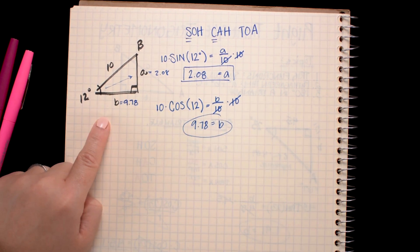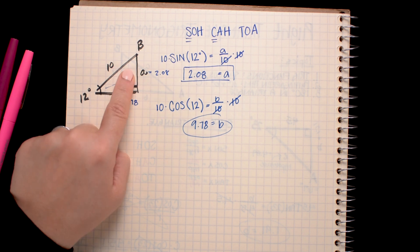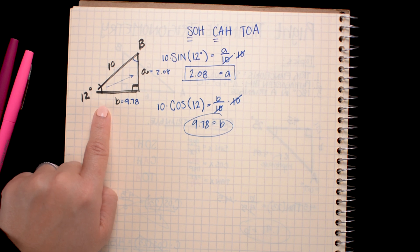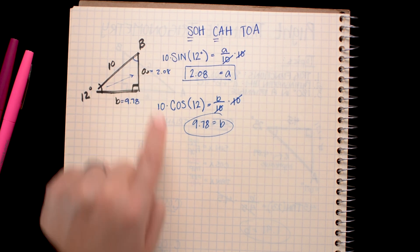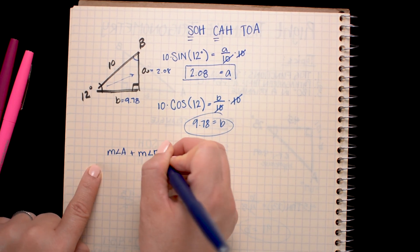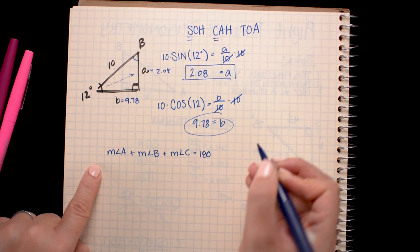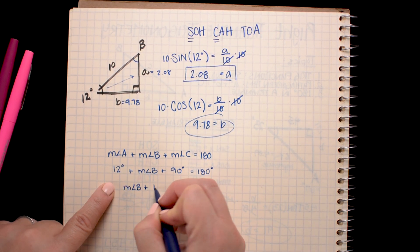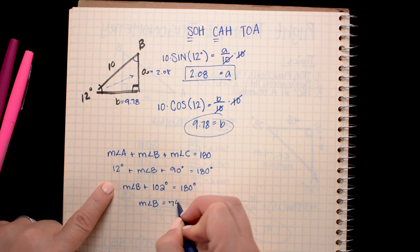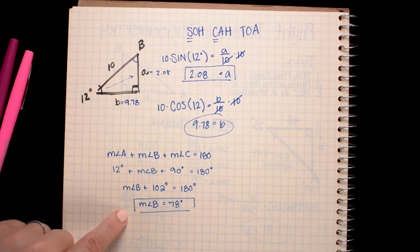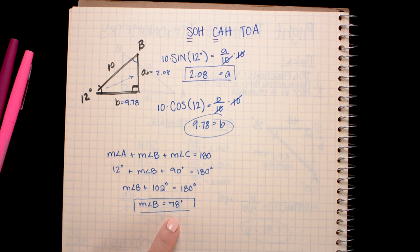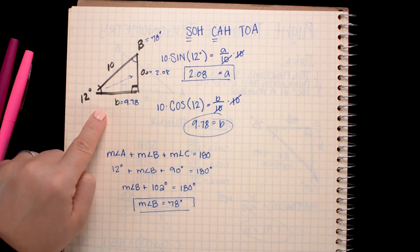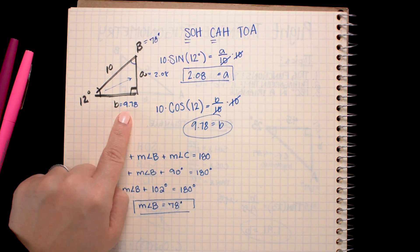The last piece of information we need is angle B. Remember all three angles must sum to 180, so I'll make an equation relating all the angles to 180. The measure of the missing angle must be 78 degrees. We have now solved for all three sides and all three angles of our triangle, so the triangle is complete.